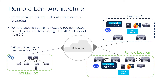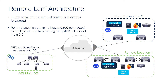The traffic forwarding happens locally from the remote leaf, whether it is to a different remote location or to the main data center. You can connect different types of virtualization environments — for example, VMware, Kubernetes, Microsoft Hyper-V — or bare metal, services devices, or even routers. You can use these remotely exactly in the same fashion as you do a local leaf.